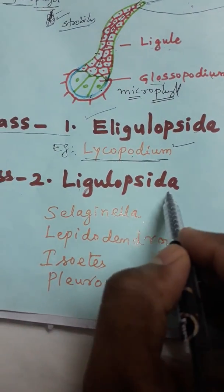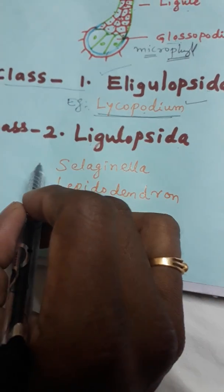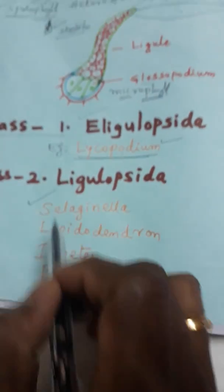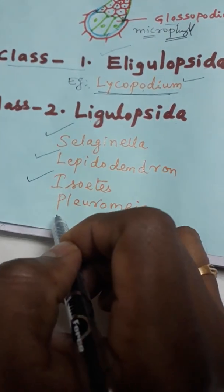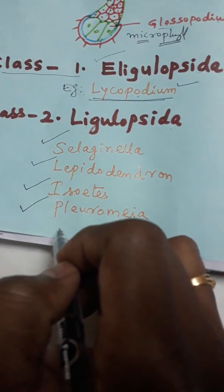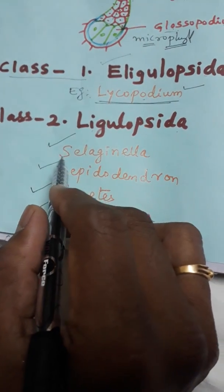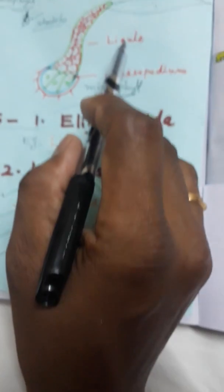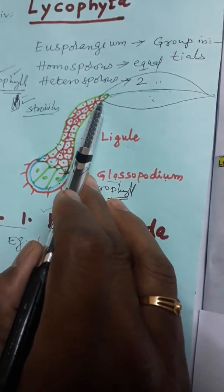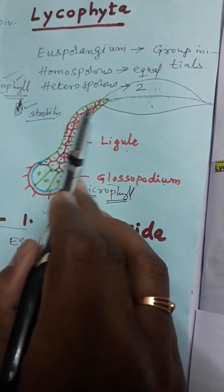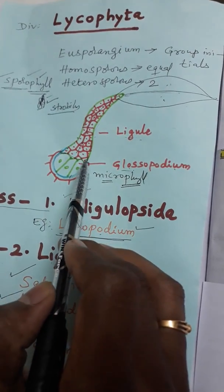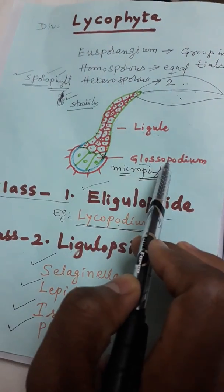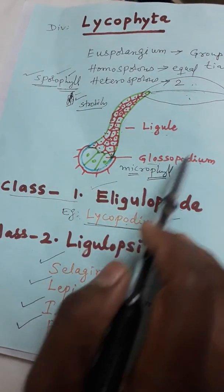The second class is Ligulopsida, meaning the plants contain a ligule. It has four orders: Selaginellales (example Selaginella), Lepidodendrales (example Lepidodendron), Isoetales (example Isoetes), and Pleuromeiales (example Pleuromeia). Totally four orders have a ligule. Ligule means the microphyll base has a leaf-like structure, and the bottom of the ligule has a crescent-shaped group of cells called glossopodium.